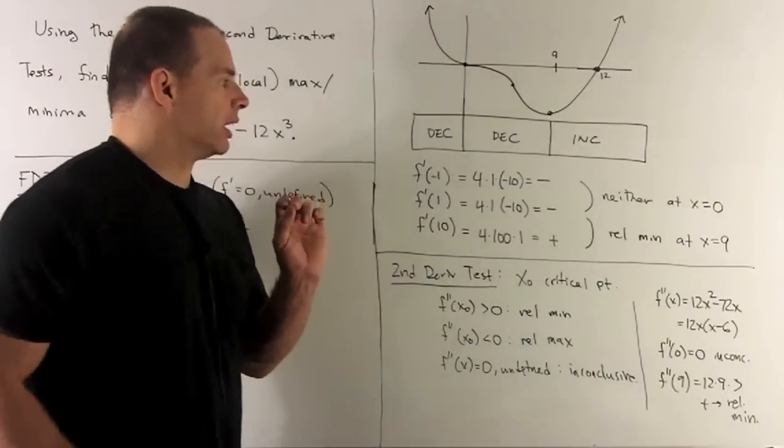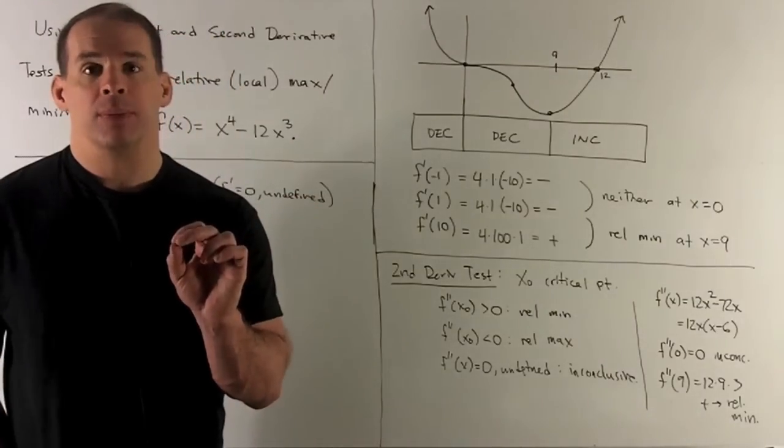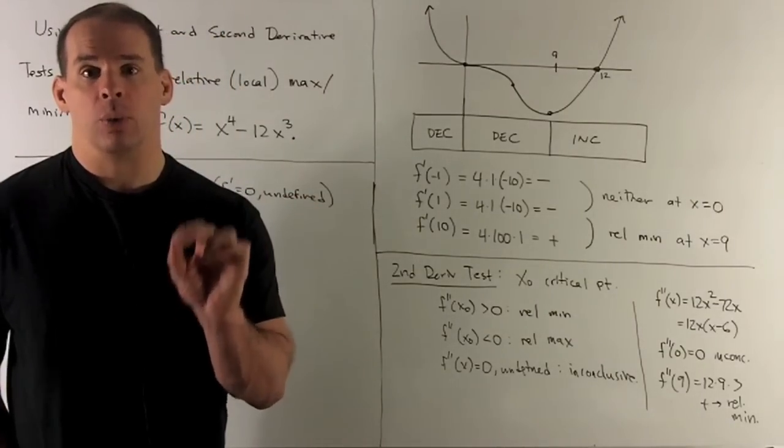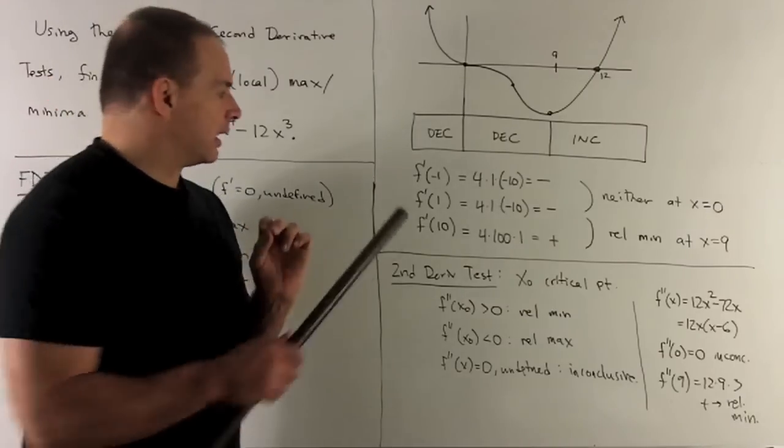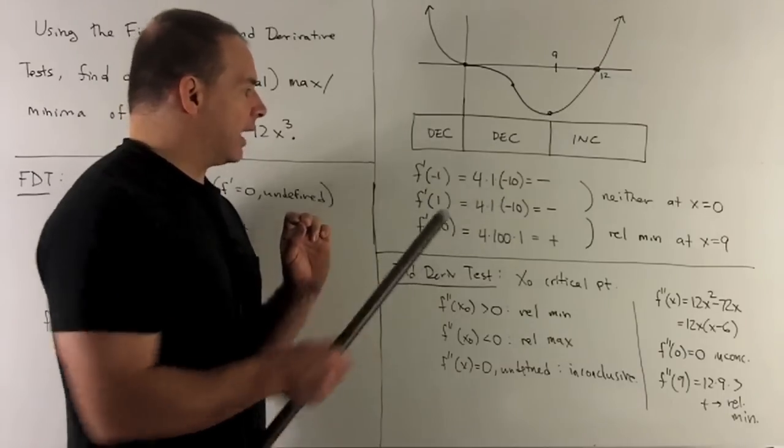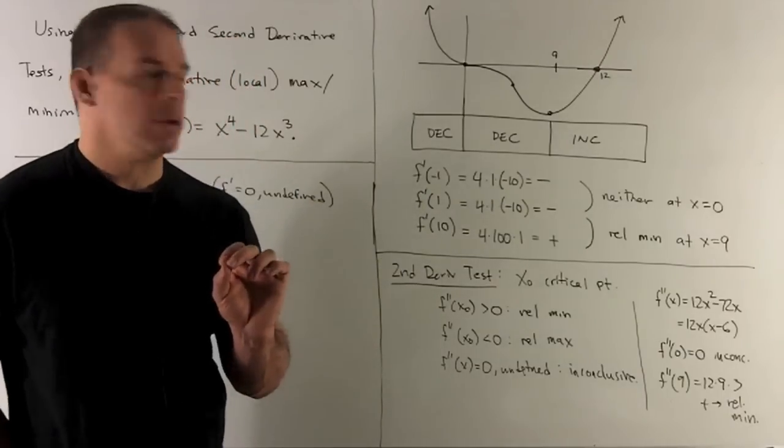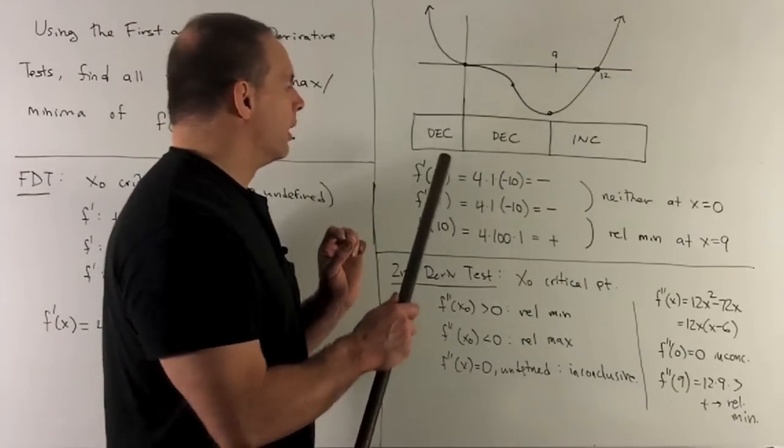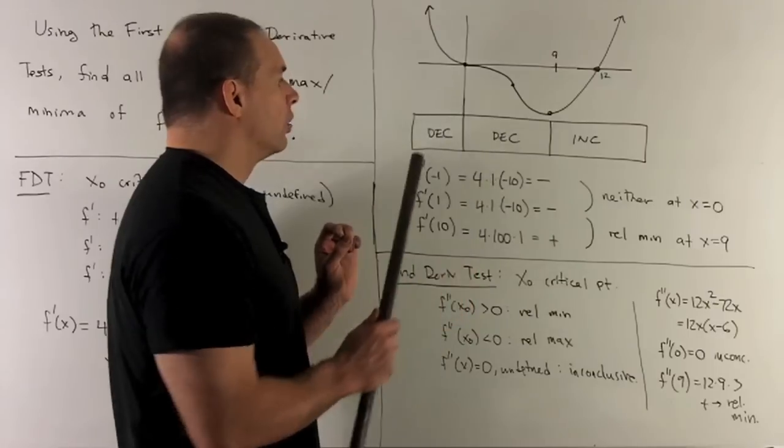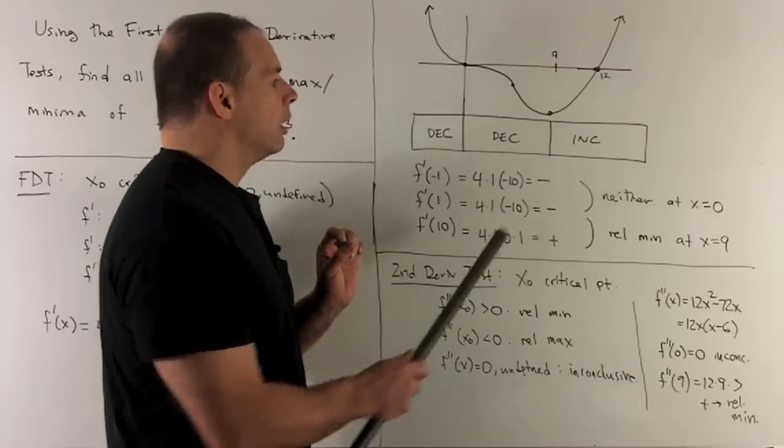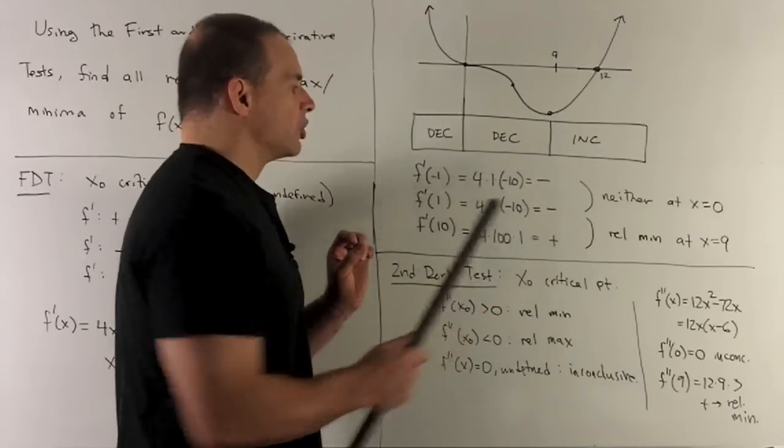Now, if I put -1 in, we'll get a minus sign out. We're not worried about the actual number, we only care about the sign. If I put 1 in, we'll get a minus sign out also. So we note, as I go from this side to this side on our critical point at 0, we're going to have neither. The sign never changes.